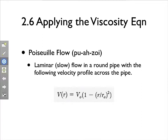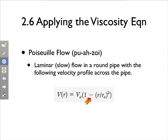Now we'll look at a particular example called Poiseuille flow - a French name - which describes laminar, very slow flow in a round pipe. This gives a velocity profile where the velocity at any radial position equals the centerline velocity, decreasing outward. At r equals r₀ (the pipe radius), the ratio r/r₀ equals one, so one minus one gives zero velocity at the wall. Poiseuille flow does adhere to the no-slip condition.